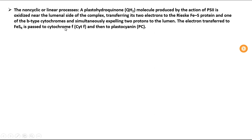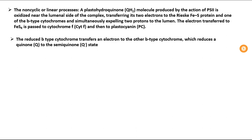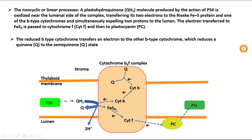In the noncyclic or linear process, a plastohydroquinone (QH2) produced by photosystem II is oxidized near the luminal side of the complex, transferring its two electrons to the Rieske FeS protein and one of the B-type cytochromes, while simultaneously expelling two protons to the lumen. The electron transferred to the FeS protein is passed to cytochrome F and then to plastocyanin. The reduced B-type cytochrome transfers an electron to the other B-type cytochrome, which reduces a quinone to the semi-quinone state.